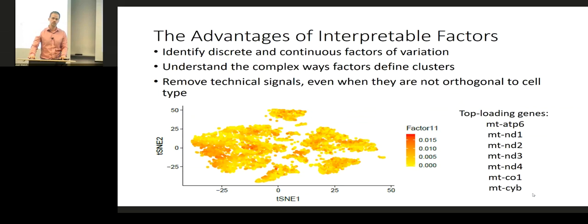Since the solution is not unique, the top genes are not necessarily always identical, but it's pretty stable in practice. There was a question about whether mitochondrial content being variable is surprising biologically — it is variable, and in some cases it could actually be an important variable. But in this case we found that removing this factor gave us results that for a number of other independent reasons looked much more biologically correct.